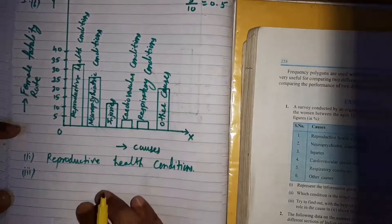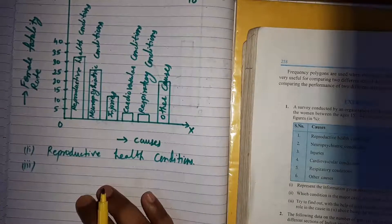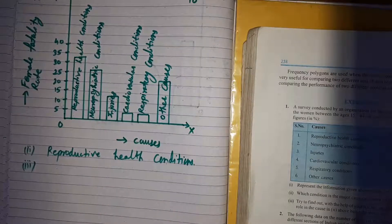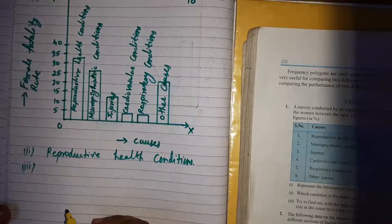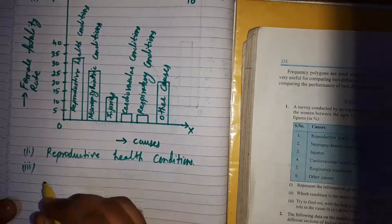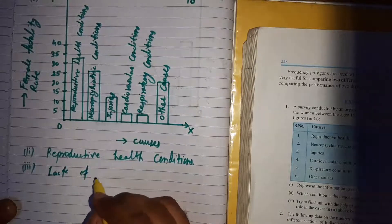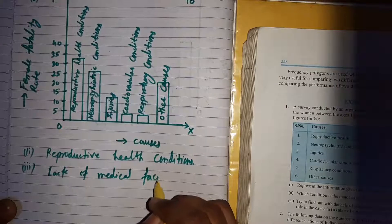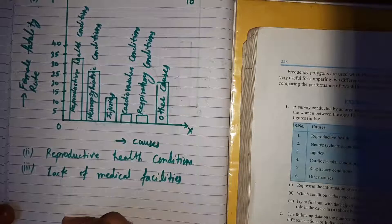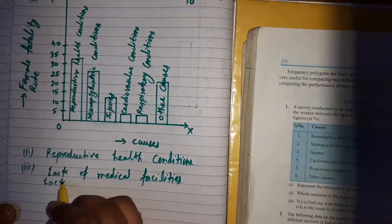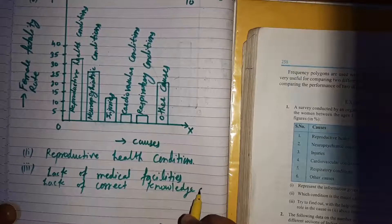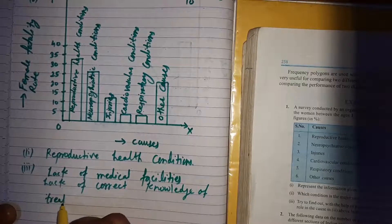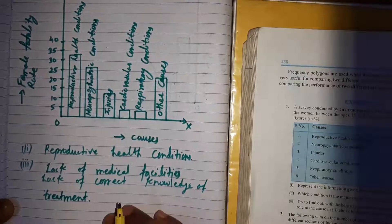The third part asks for two factors that play a major role in reproductive health being the major cause. We can write: first, lack of medical facilities; and second, lack of correct knowledge of treatment.